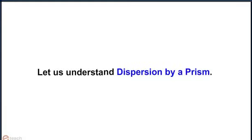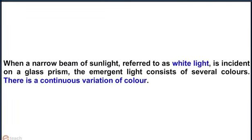Let us understand dispersion by a prism. When a narrow beam of sunlight, referred to as white light, is incident on a glass prism, the emergent light consists of several colours. There is a continuous variation of colour.